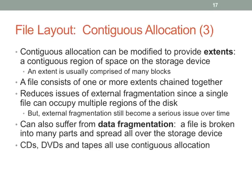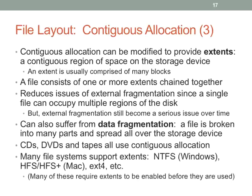CDs, DVDs, and tapes all use contiguous allocation — that tends to be fine because they aren't written very often. Tapes are usually written in one shot for backup, so contiguous allocation is perfectly fine. Many file systems do support extents, though used in a very different way. Extents are also a way to get up to much larger file sizes — if you want petabyte file sizes, then the file system format itself limits file sizes, and extents are an easy way of working around that.